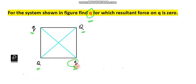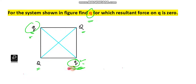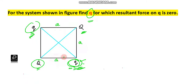We have two charges: one Q here and one Q here. Let us take any one of the charges and consider this particular charge. It is given as a square, so each side has side length A.